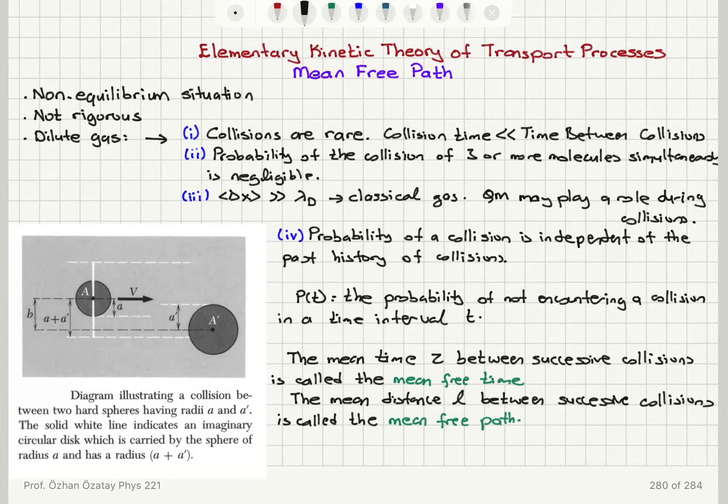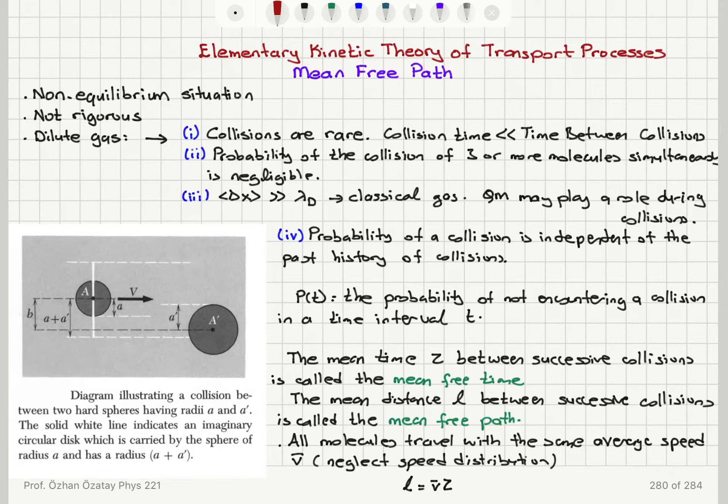And we're going to assume that all molecules travel with the same average speed, which I'm going to denote by V bar. So basically, we're neglecting Maxwell's speed distribution in this elementary theory. Then we have a simple relationship: the mean free path L is equal to the mean speed V bar multiplied by the mean free time tau.